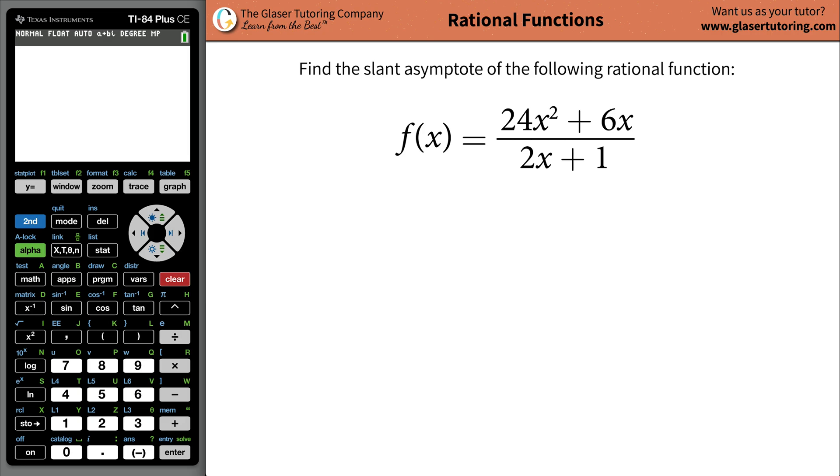Hi there, it's Andrew, and today I would like to teach you how to find the slant asymptote of the following rational function of 24x squared plus 6x divided by 2x plus 1.